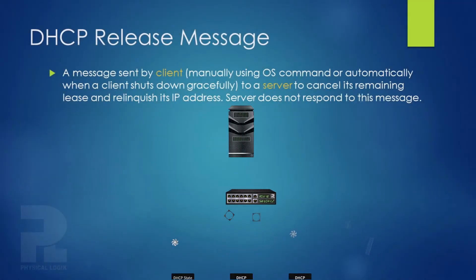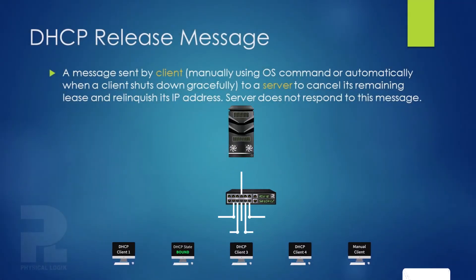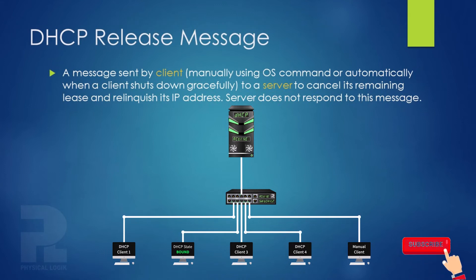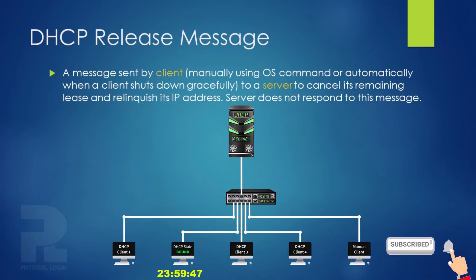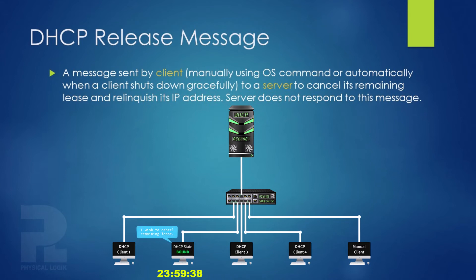DHCP Release: After a device obtains IP configurations from a DHCP server, it'll be able to use this IP address for a specific time period called the Lease Duration, Lease Time, Lease Period, or simply Lease, which may be specified by the server. After this timer expires, assuming that all attempts to extend this lease fail, the DHCP client must relinquish this IP address. However, a client may decide to relinquish this IP address explicitly — that is, before the timer expires — by sending a DHCP Release packet to the server.